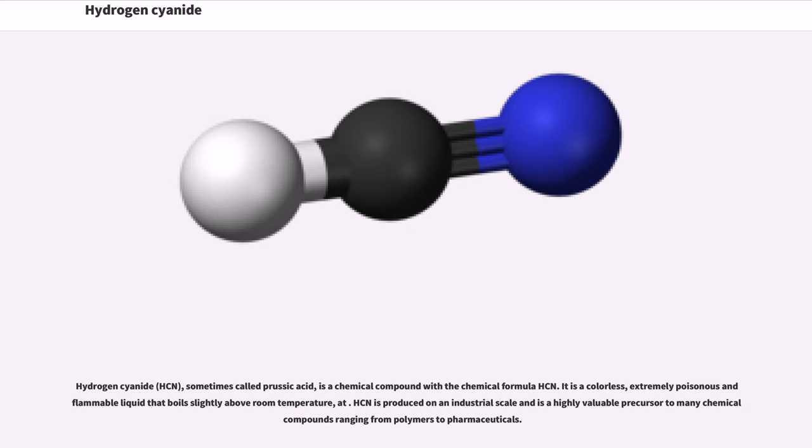Hydrogen cyanide, sometimes called prussic acid, is a chemical compound with the formula HCN. It is a colorless, extremely poisonous, and flammable liquid that boils slightly above room temperature. HCN is produced on an industrial scale and is a highly valuable precursor to many chemical compounds ranging from polymers to pharmaceuticals.